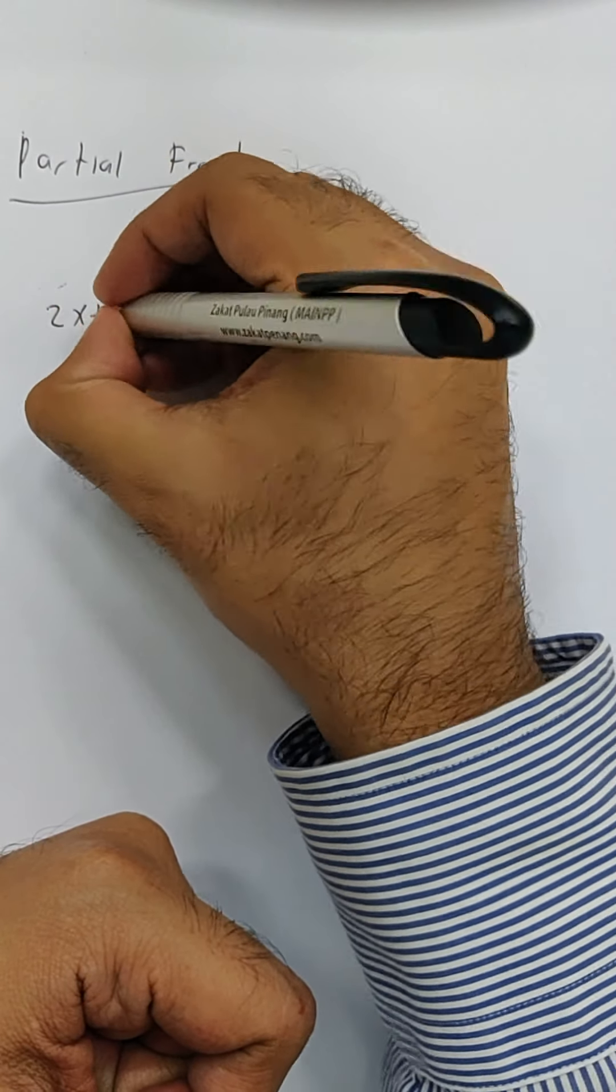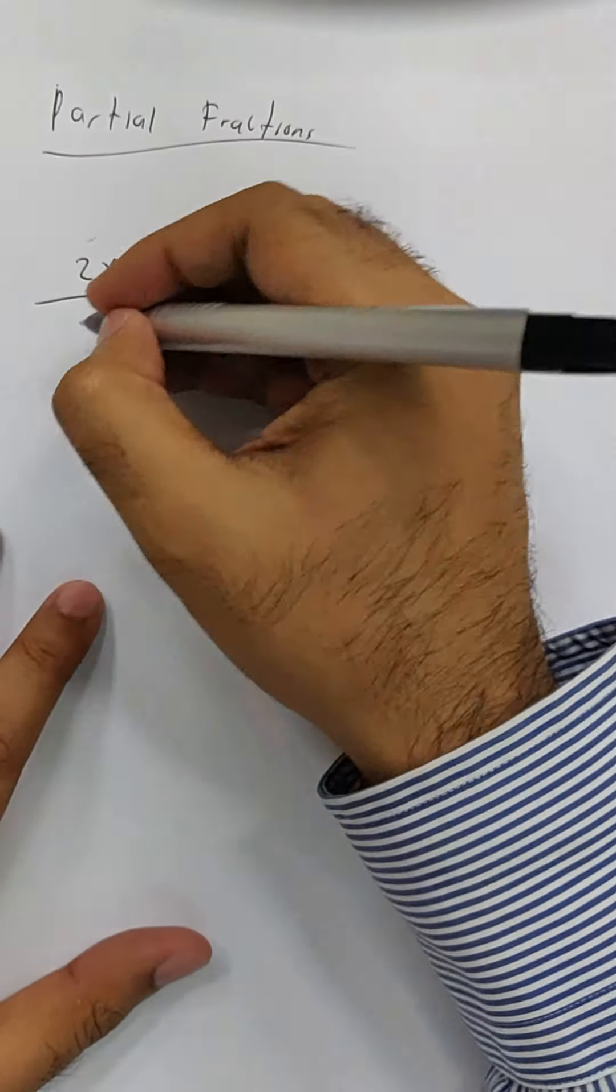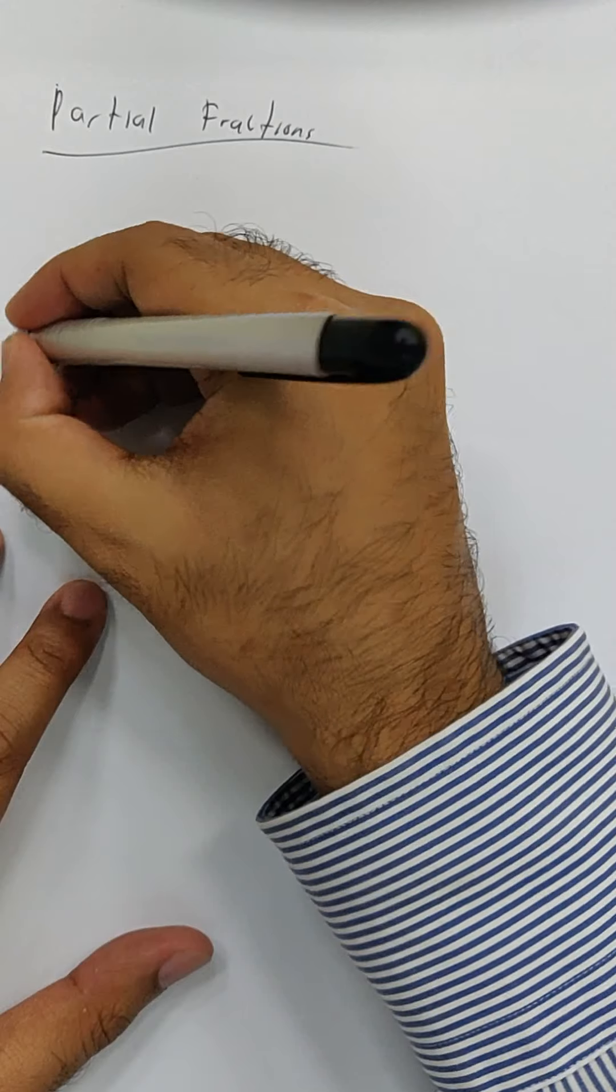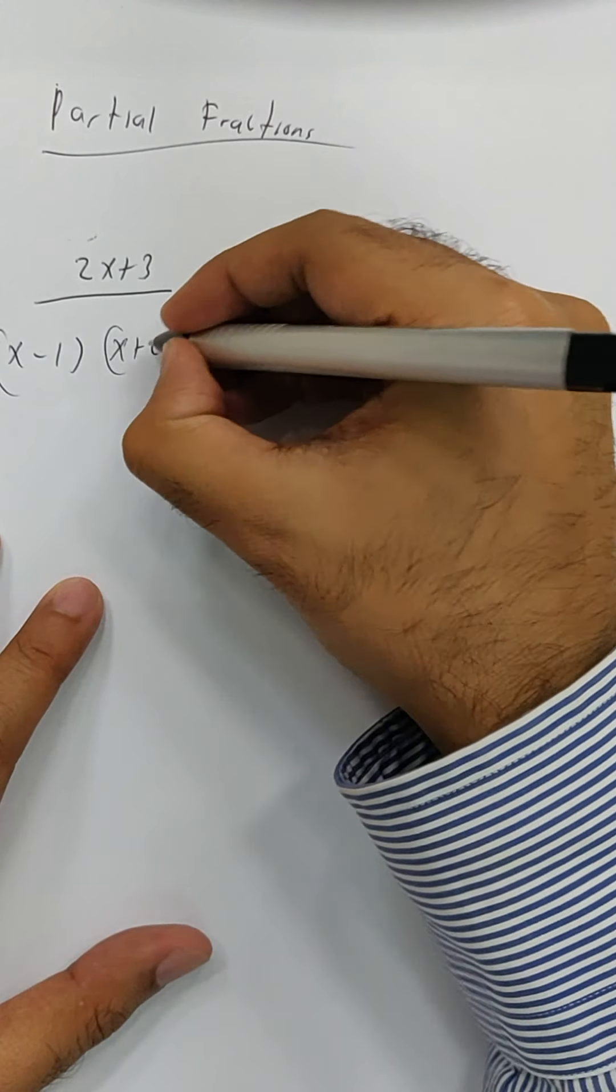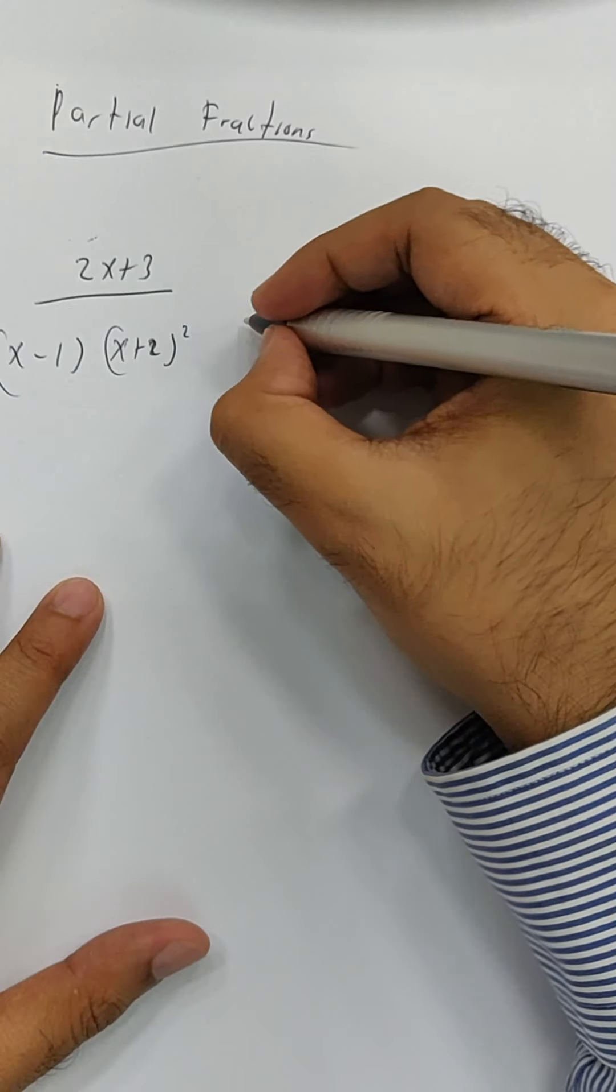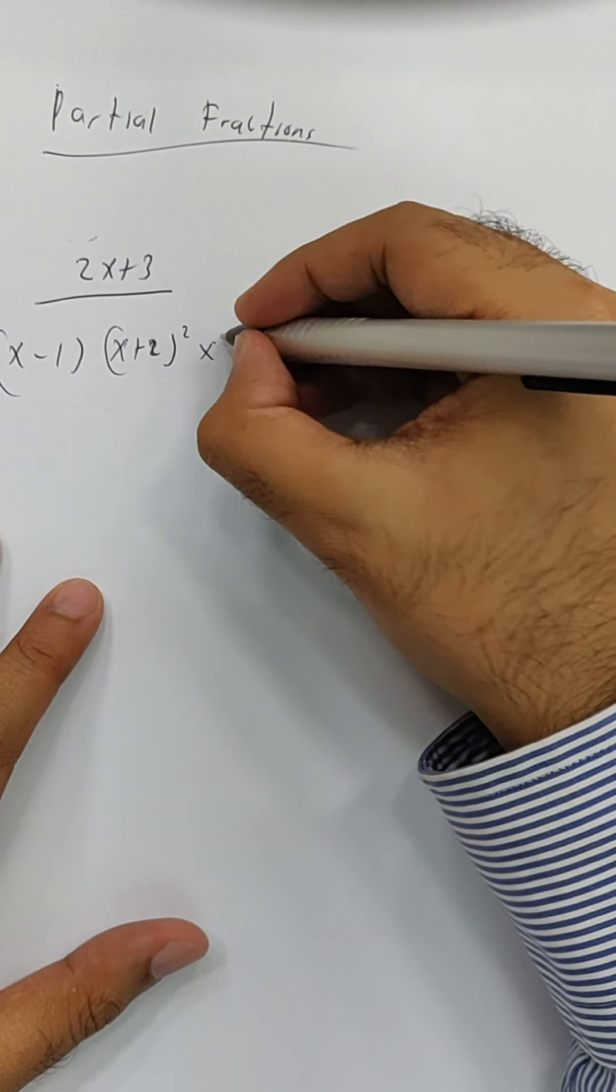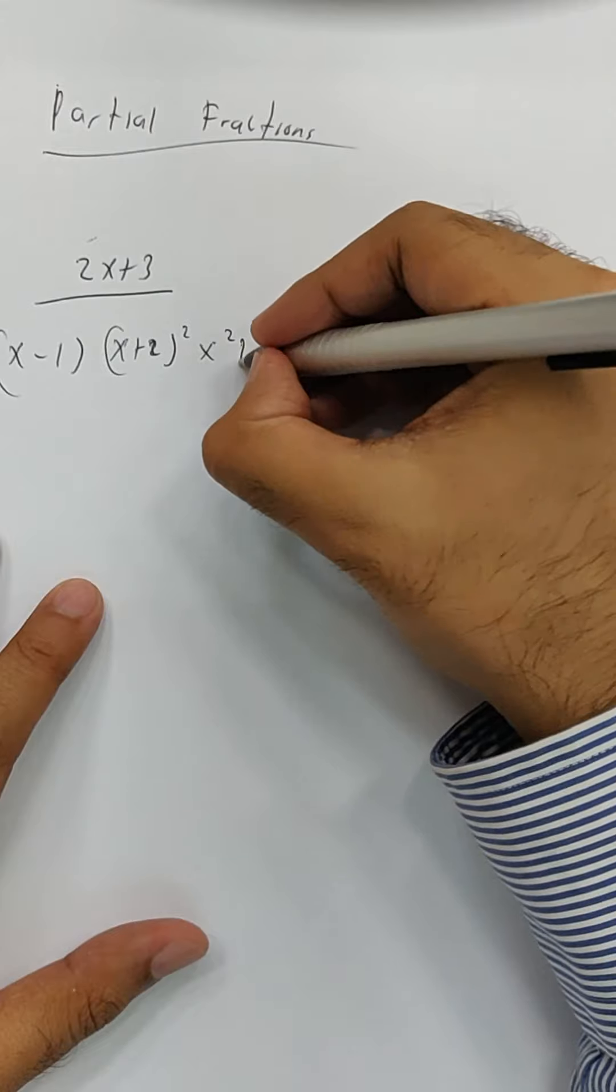Let's say you're given something like this: 2x plus 3. Okay, this might not be solvable, but I'm just trying to show you all three of them. Where one is x minus 1, x plus 2 squared, and the favorite is x squared plus 1. Let's go with this one.